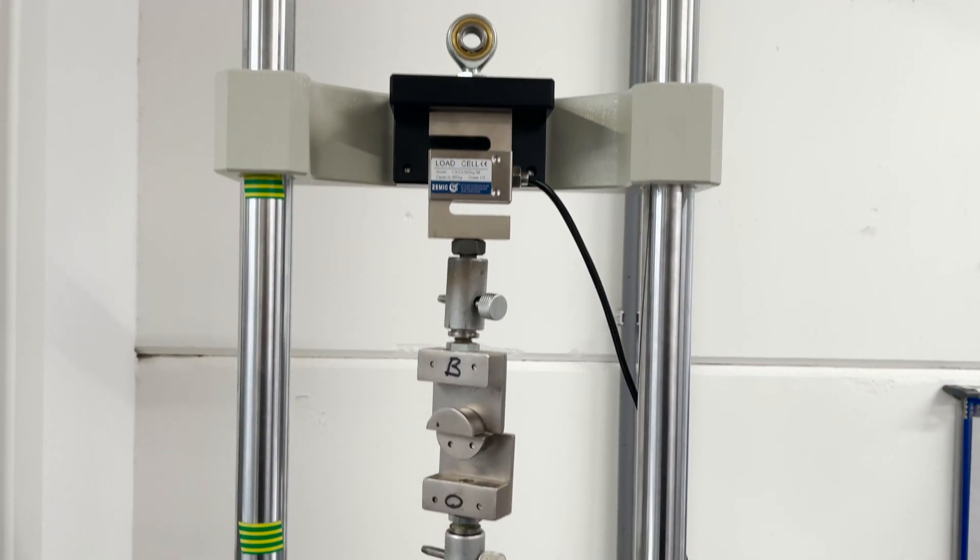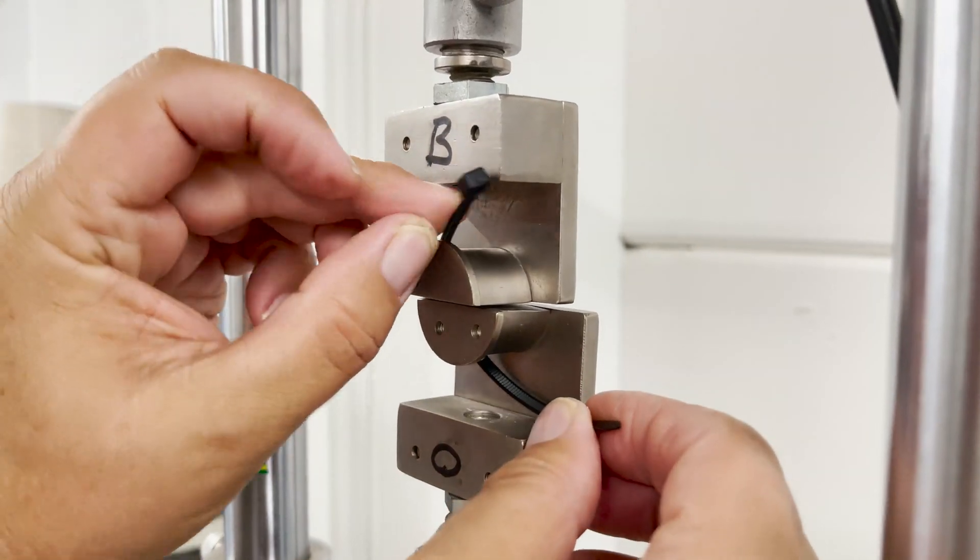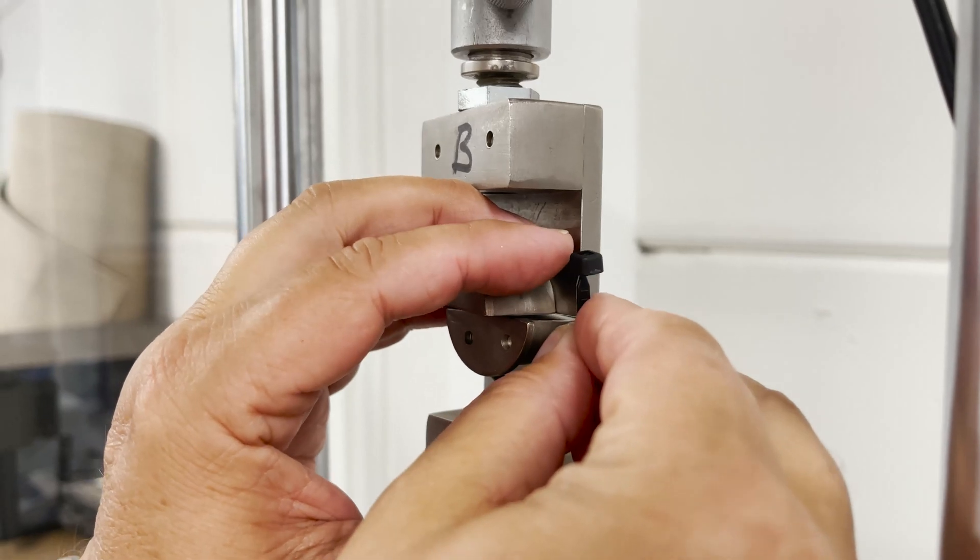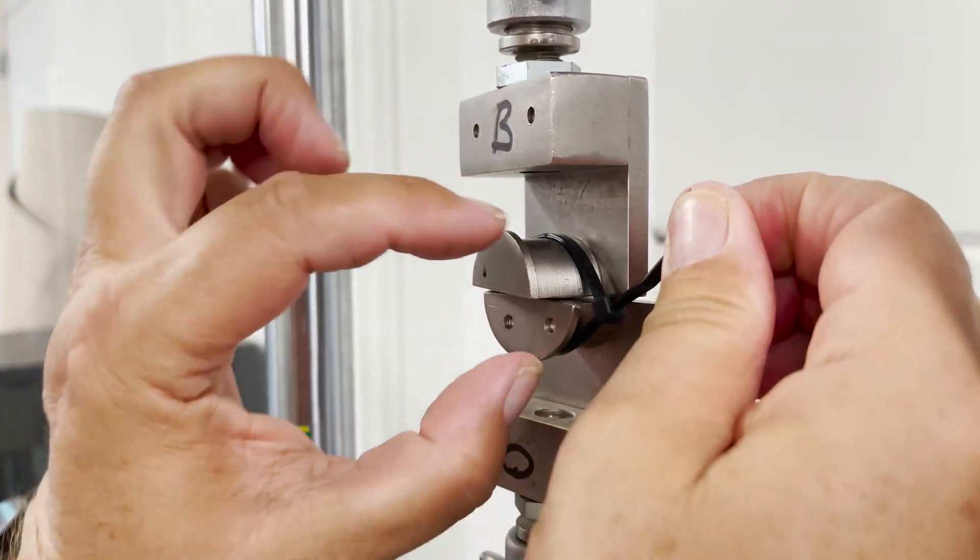The tensile strength is tested using a machine which has especially been designed for this purpose. The cable tie is looped around two semi-circles, and in doing so, the way in which a cable tie would normally be used is simulated.